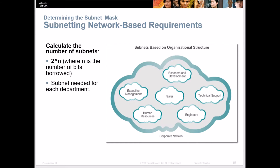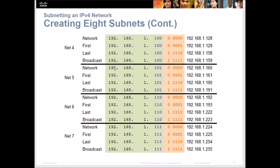When we break a subnet up, we do the first subnet, the second one, and so forth — subnets one through seven — but we break those up and they are all the same length. Each one of them has the same amount of IP addresses available for use.